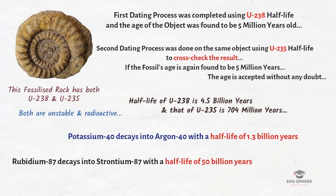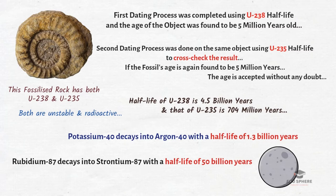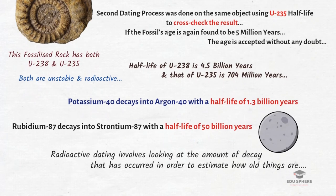50 billion years is an extraordinarily long time — in fact, rubidium-strontium dating has been used to date rocks brought back from the moon. These methods work well for very old prehistoric sites. However, a disadvantage is that they can only be applied to rocks and minerals rich in uranium, potassium, or rubidium — such as volcanic rocks rich in potassium. Radioactive dating involves measuring the decay that has occurred, using the known half-life to calculate the exact age of a found object.